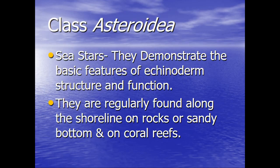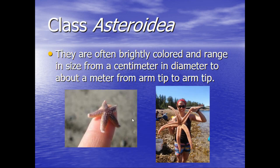Let's go back to talk a little bit about class Asteroidia. Again, these are the sea stars, and we will go into a little bit more detail about them. They demonstrate the basic features of echinoderm structure and function, so that's why they are a good example. They are regularly found along the shoreline on rocks, or sandy bottom, and found on the coral reef. They can be found in any and all of the oceans — up in the Arctic where it's extremely cold, and in tropical regions. You can find members of class Asteroidia just about anywhere in the ocean.